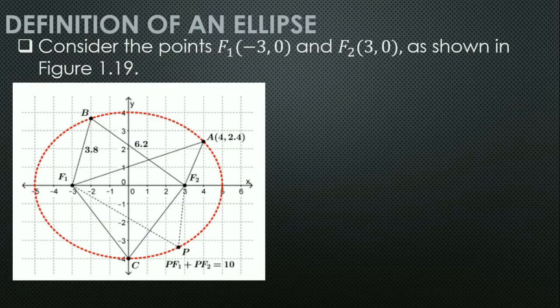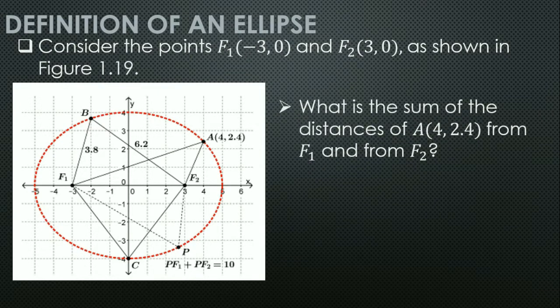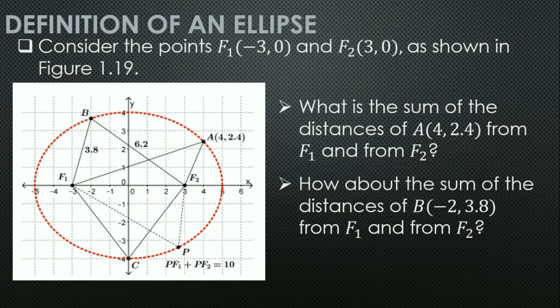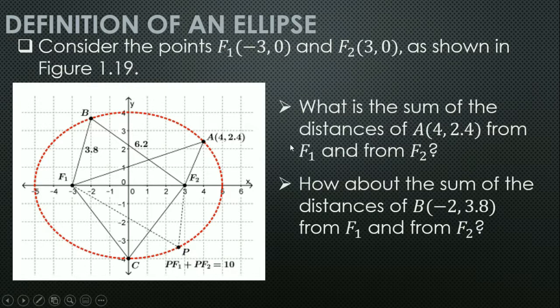Definition of an ellipse. We consider the points F₁ with coordinates (−3, 0) and F₂ at point (3, 0) as shown in the figure. The sum of the distances of point A from F₁ and F₂, and similarly for point B from F₁ and F₂, is equal to 10.